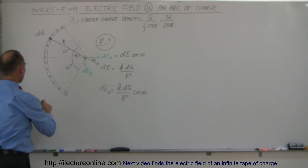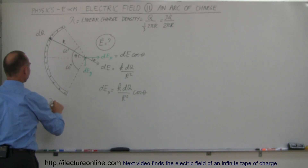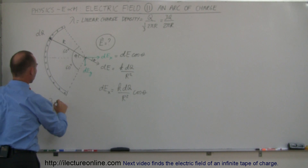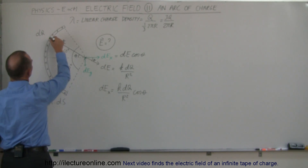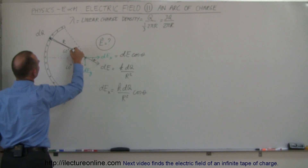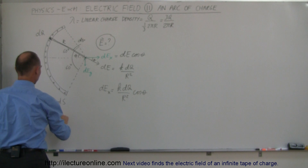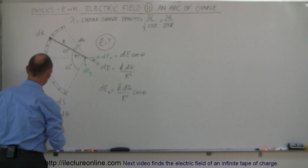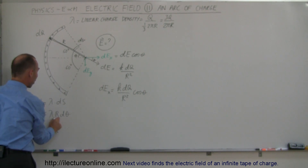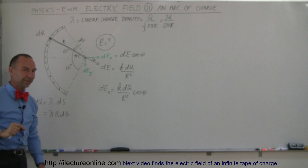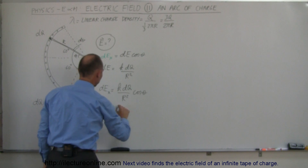To find DQ, it equals the linear charge density times the arc length Ds. A small segment of arc length subtends a small angle D theta, so Ds can be written as R D theta. Therefore DQ on this little segment can be written as lambda times R D theta, representing a small arc length Ds.